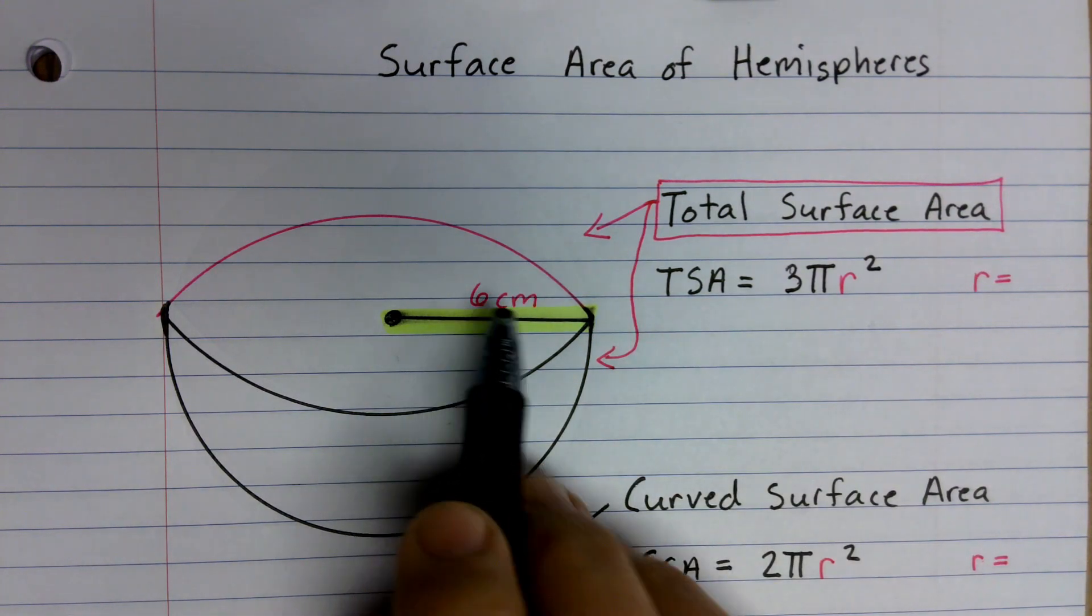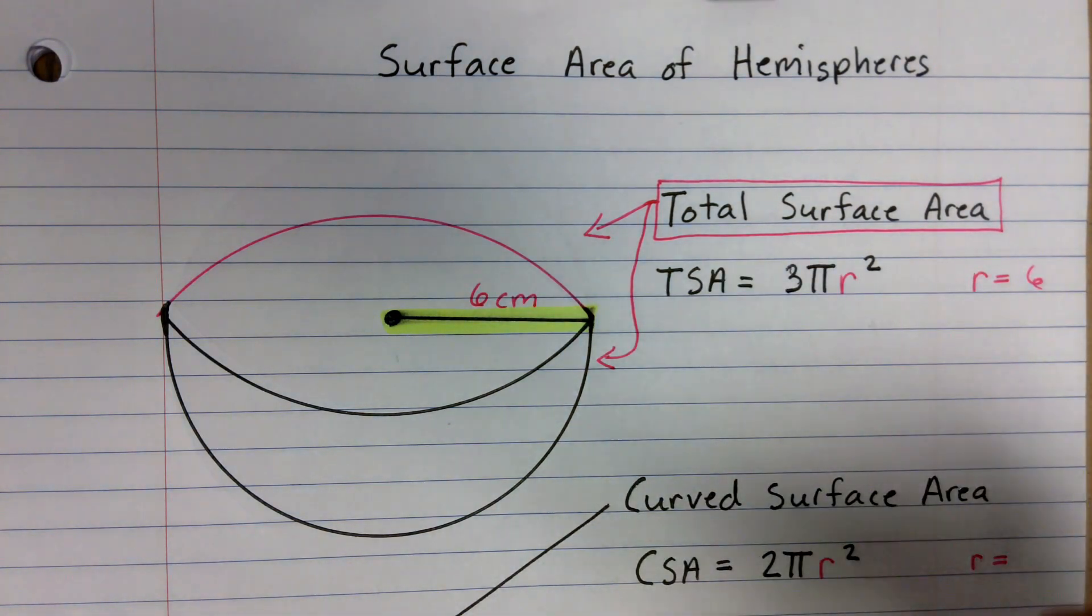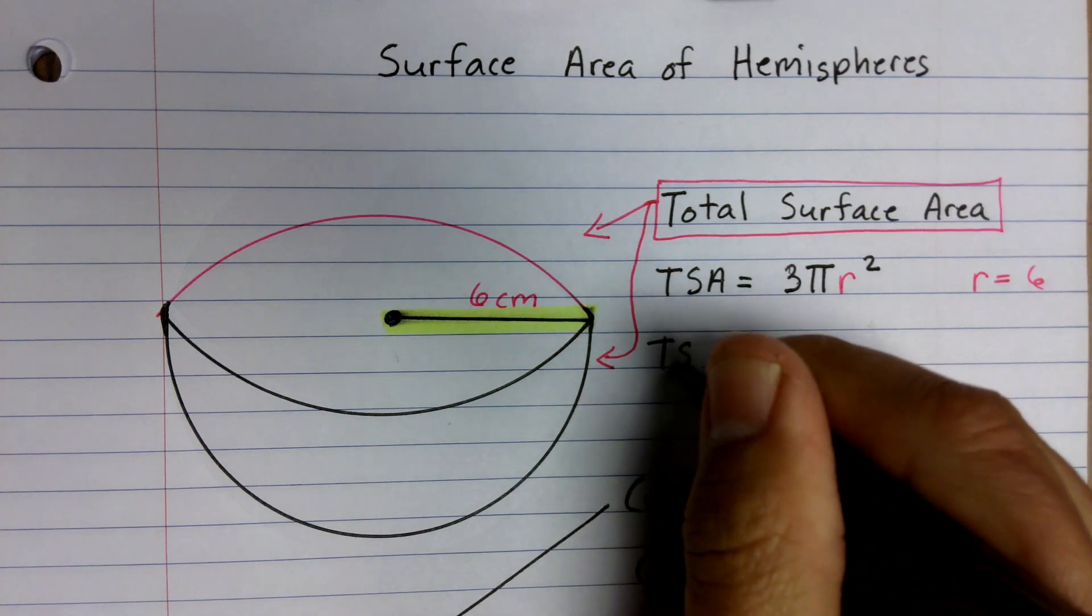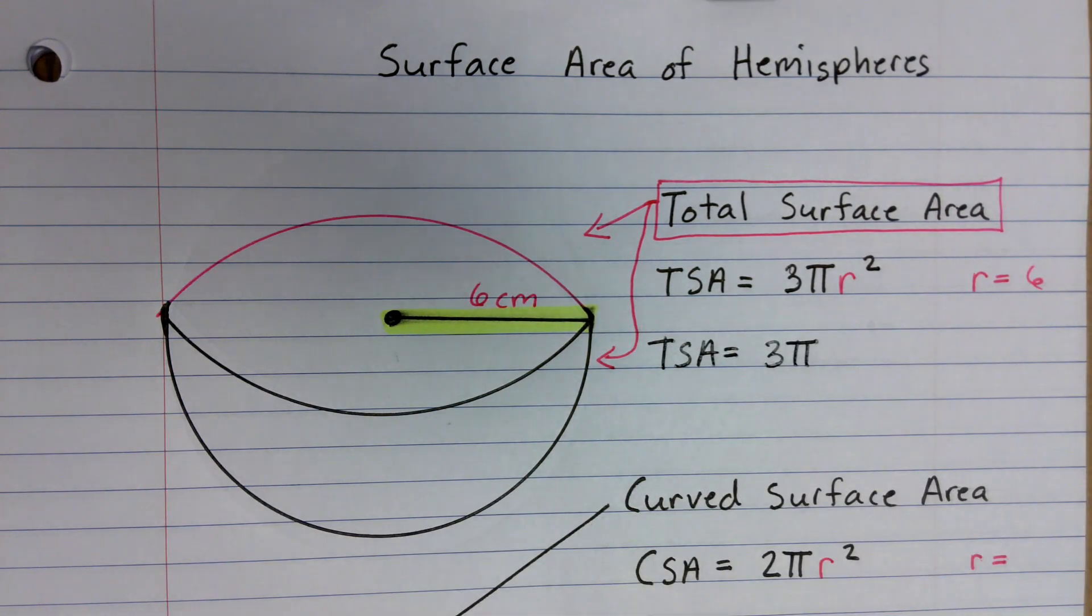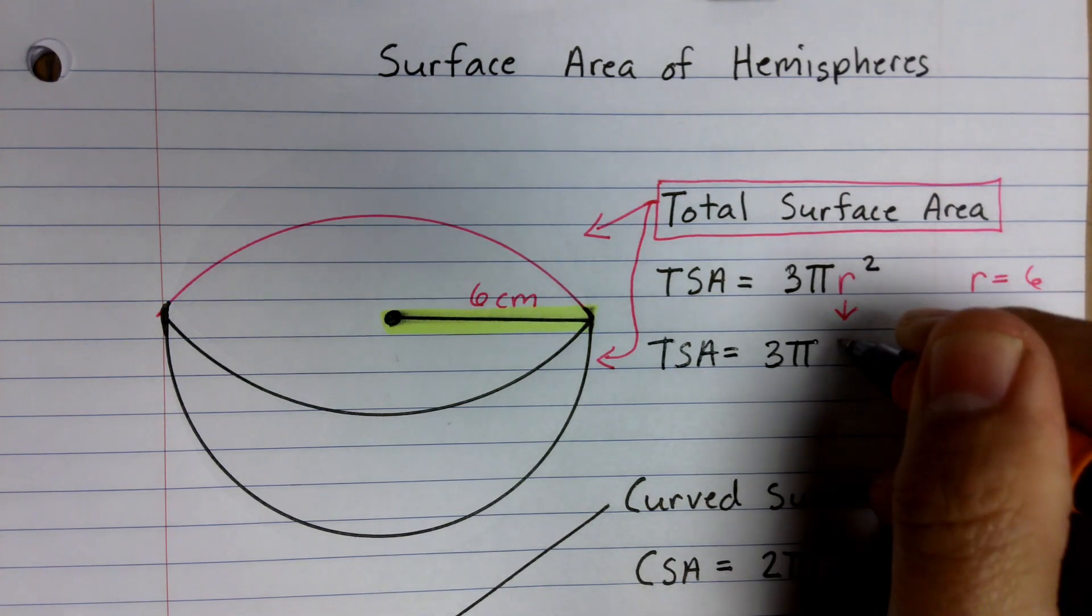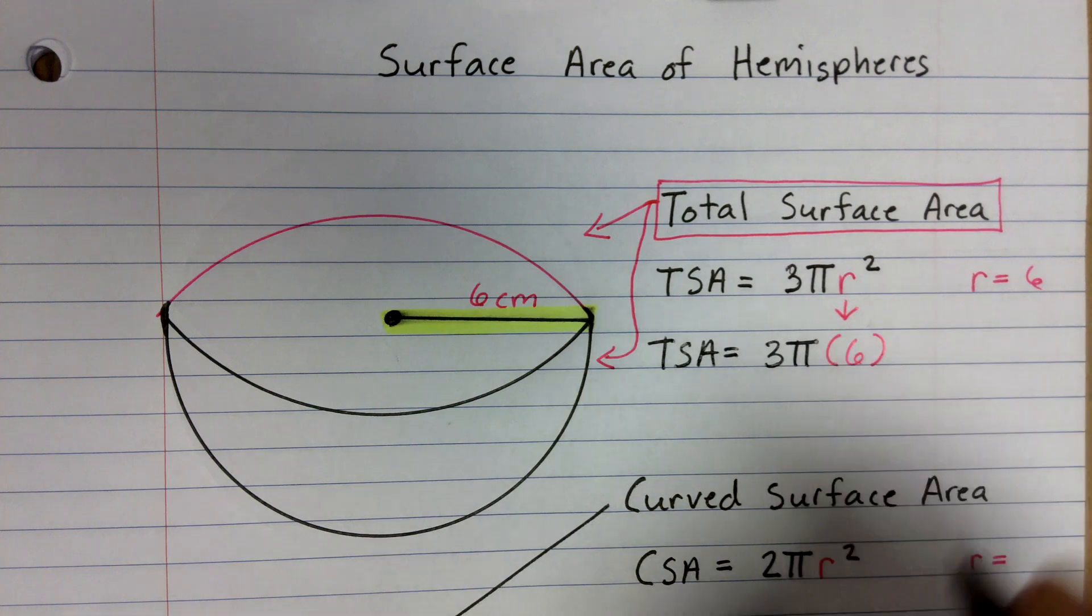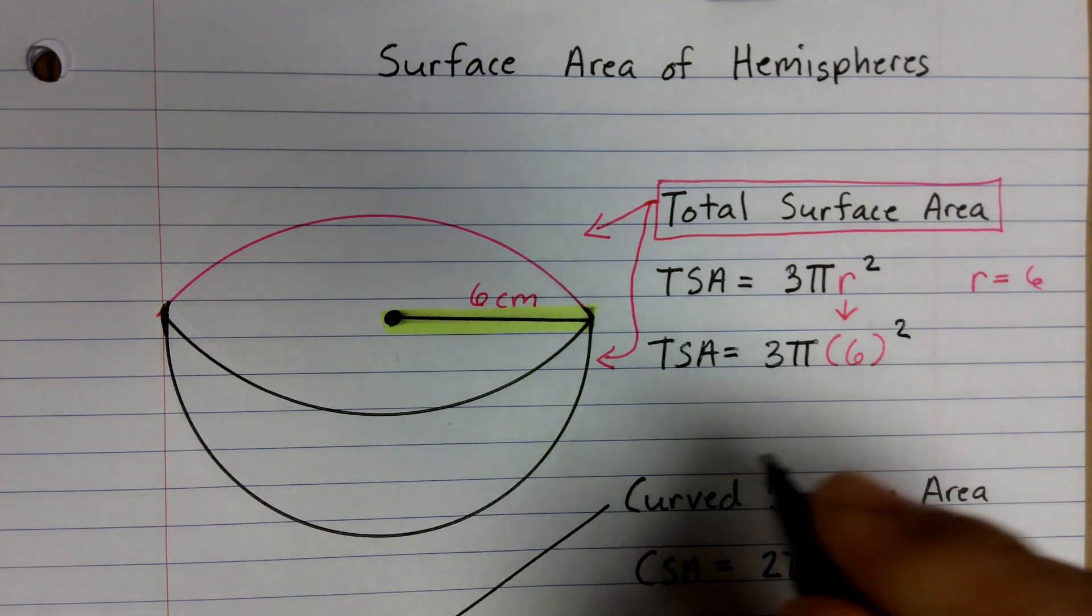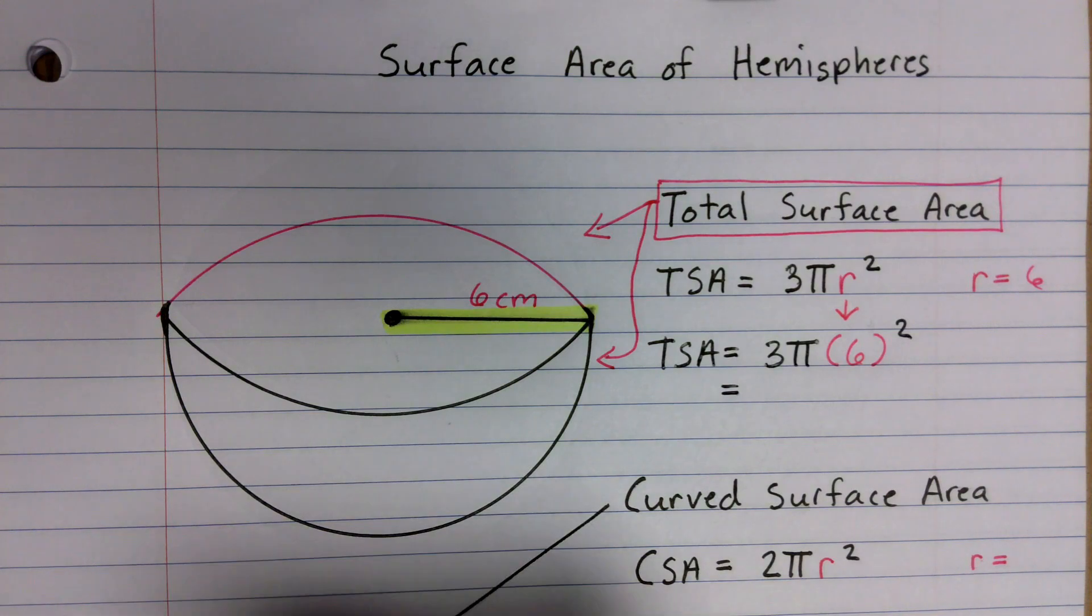And we're going to go ahead and take that 6 centimeters, which is our radius, and just label it off to the side, and then substitute it into your formula. So in other words, my TSA is going to be equal to 3 times π times my radius, which happens to be 6 squared.